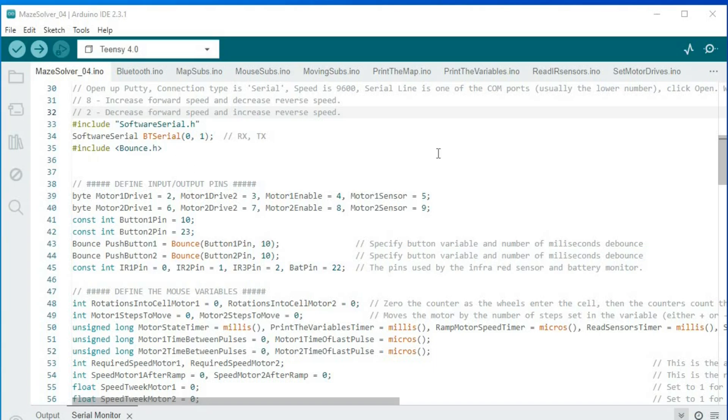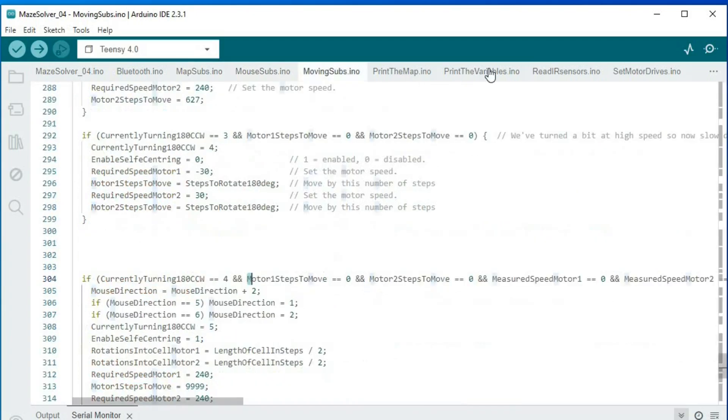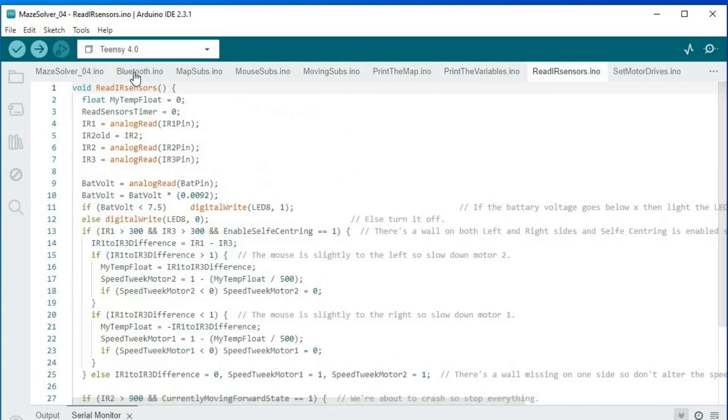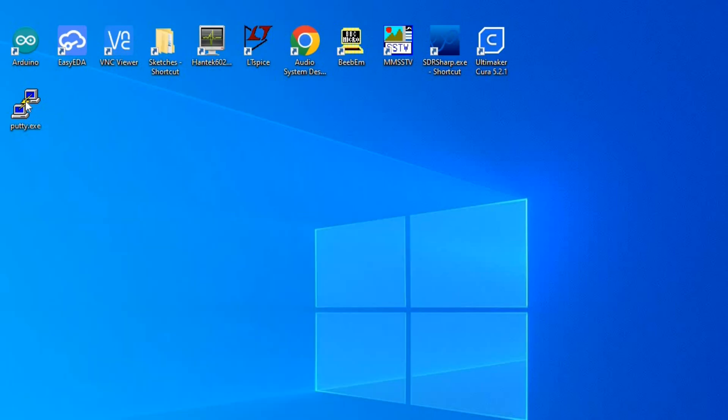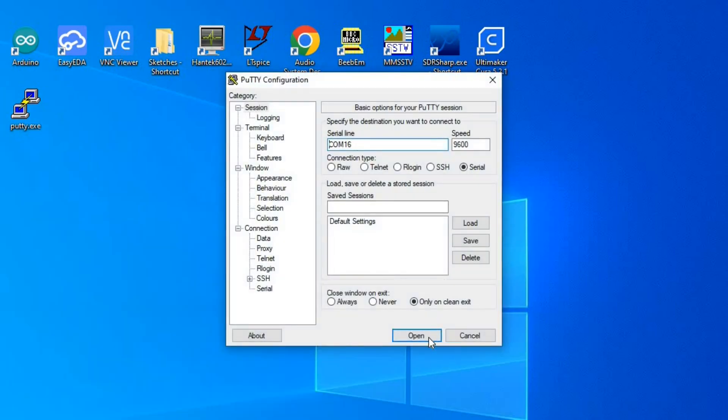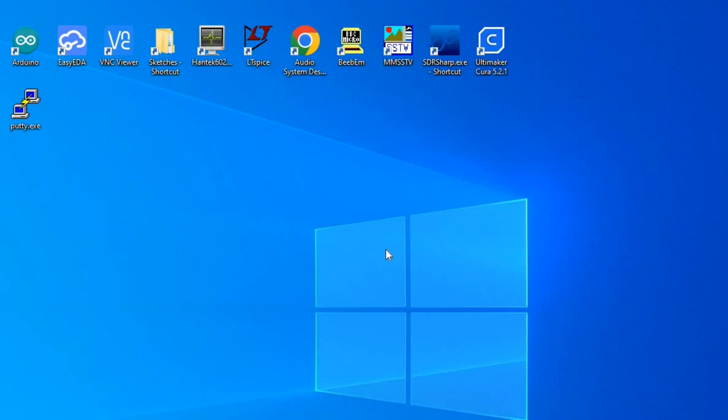This is the code written in the Arduino IDE. There are an awful lot of subroutines for it, but the main one I use is the Bluetooth. So if I open up Putty and on COM 16 I have the Bluetooth connected.